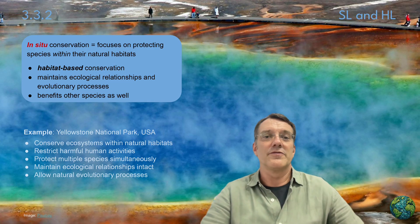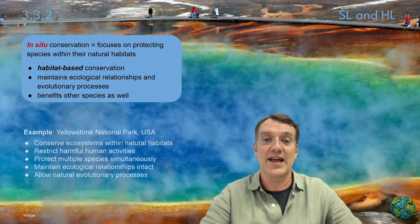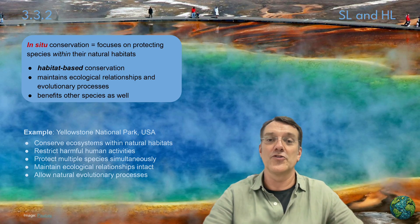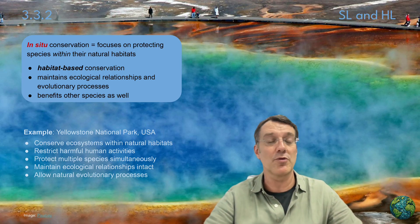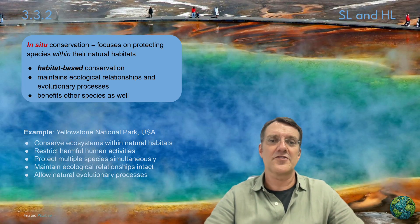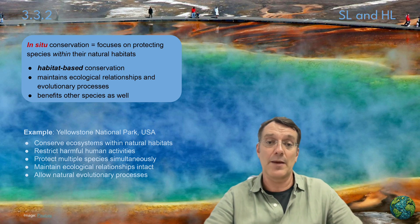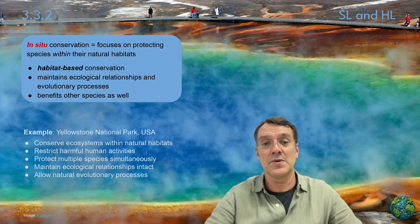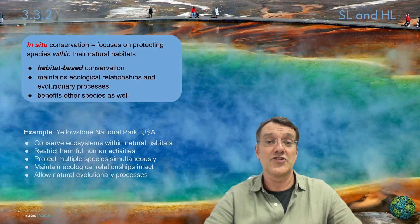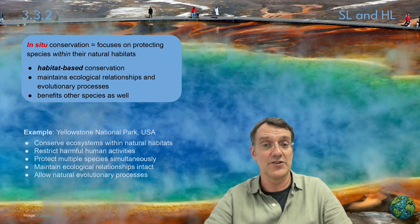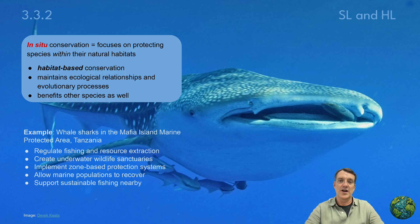In-situ conservation focuses on protecting species within their natural habitats — 'in-situ' translating to 'in the situation.' This habitat-based approach maintains ecological relationships and evolutionary processes while benefiting many different species simultaneously. Yellowstone National Park in the U.S. exemplifies this strategy, conserving ecosystems within natural habitats, restricting harmful human activities, protecting multiple species at the same time, and maintaining ecological relationships intact so natural evolutionary processes can continue.